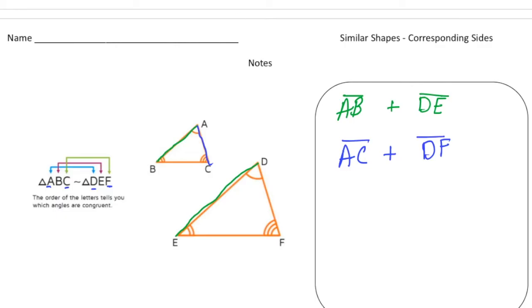Alright, and finally, there's one last one. We have side BC and side EF. And again, BC, that's the last two letters, and so is EF. So we have side BC and side EF. And those are our pairs of corresponding sides.